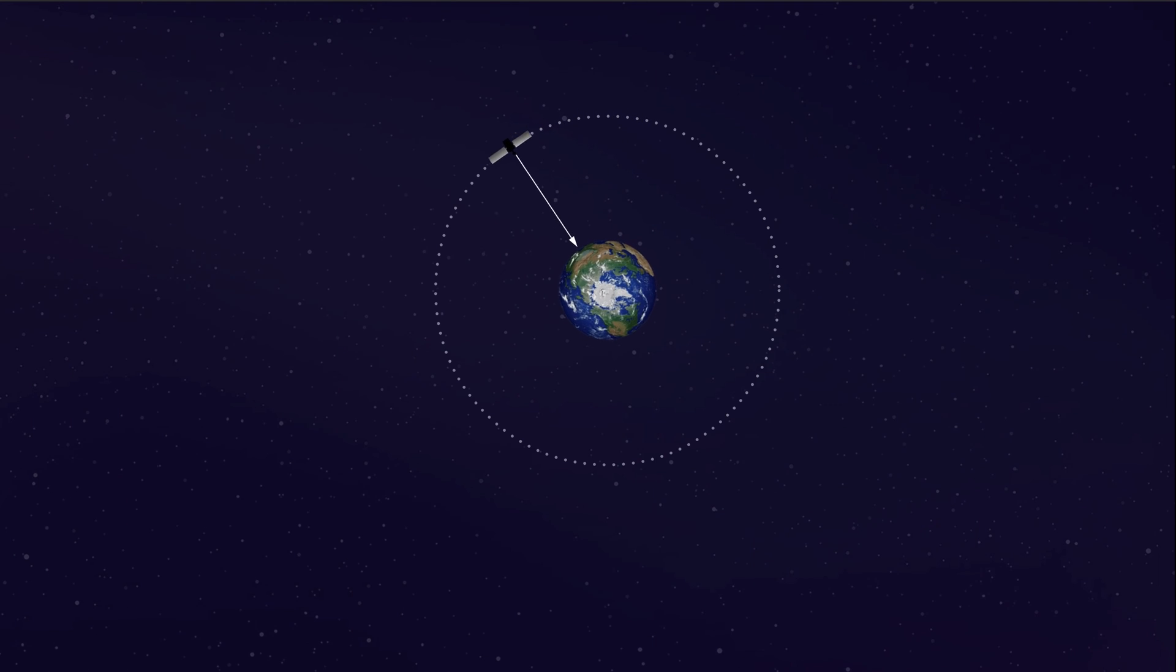Geostationary satellites rotate in a circular orbit above a fixed point on the Earth's equator. The orbit for this type of satellite is always 35,786 kilometers above the Earth's surface. A pair of geostationary satellites, A and B, are in orbit on exactly opposite sides of the Earth.